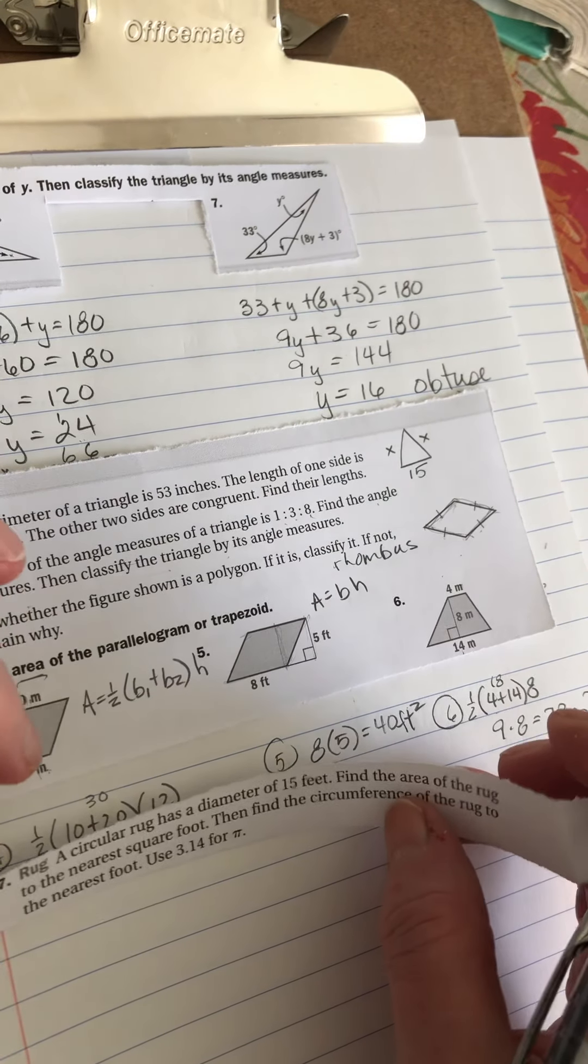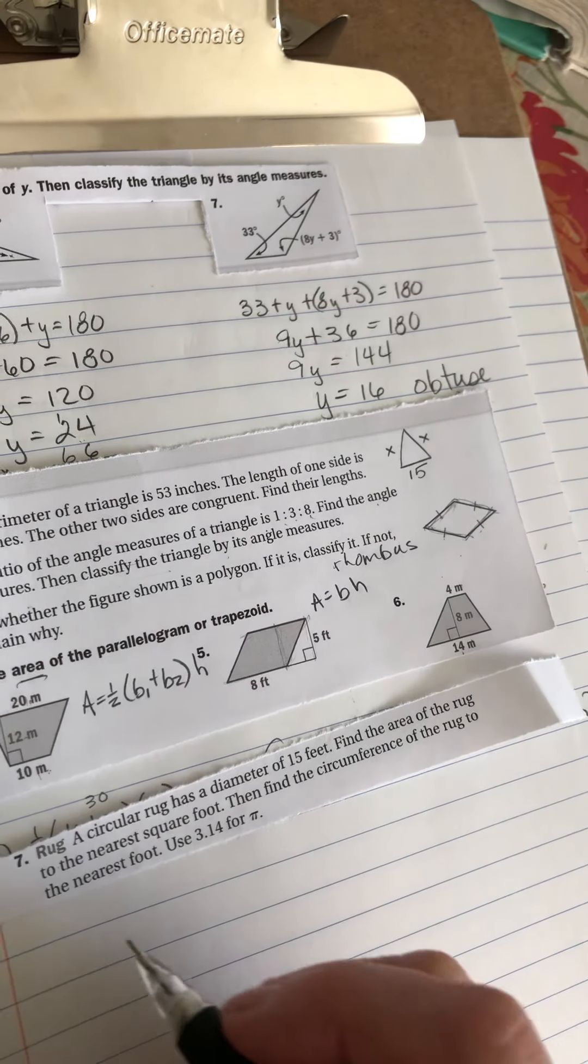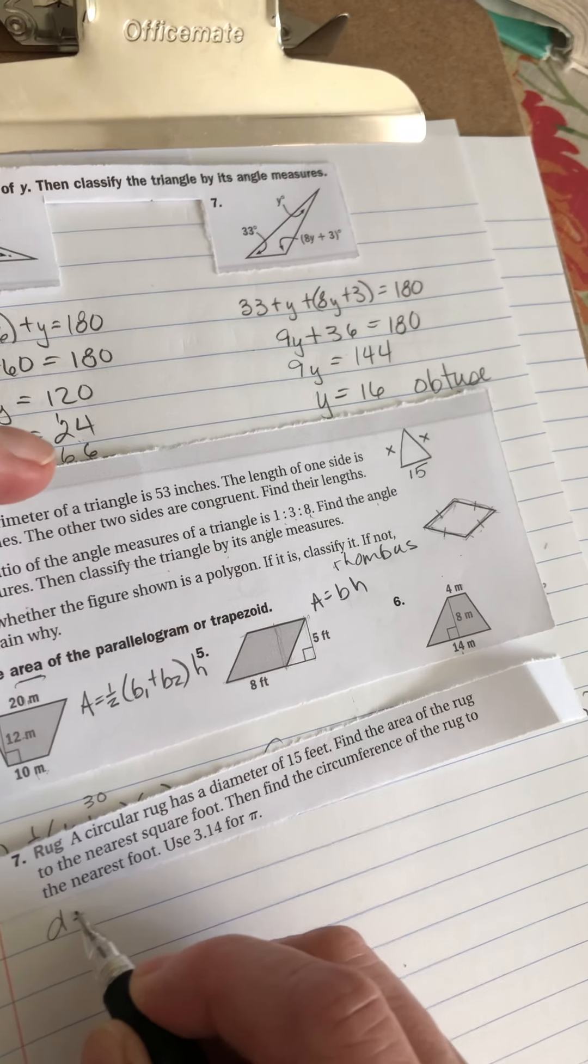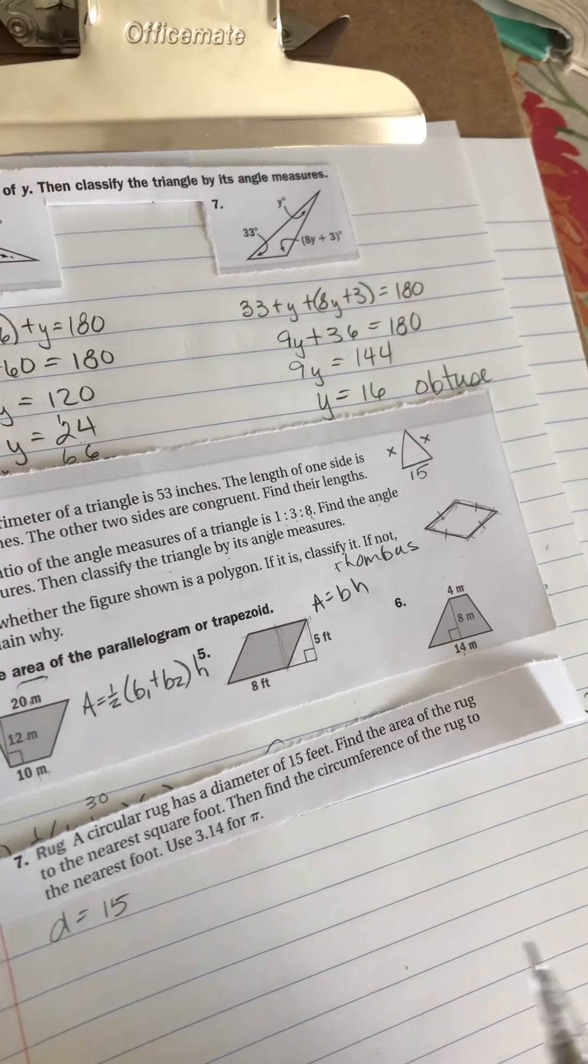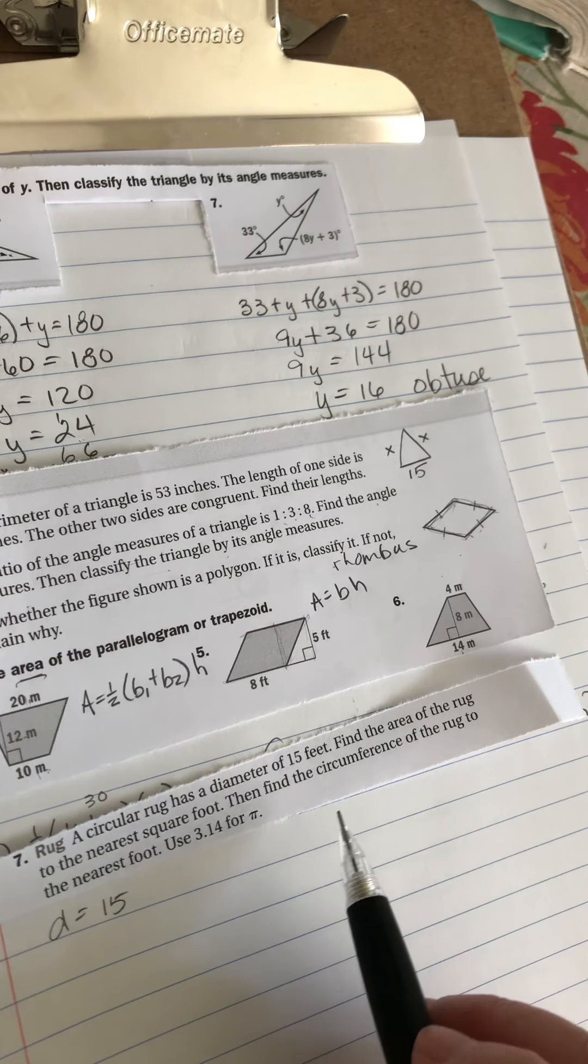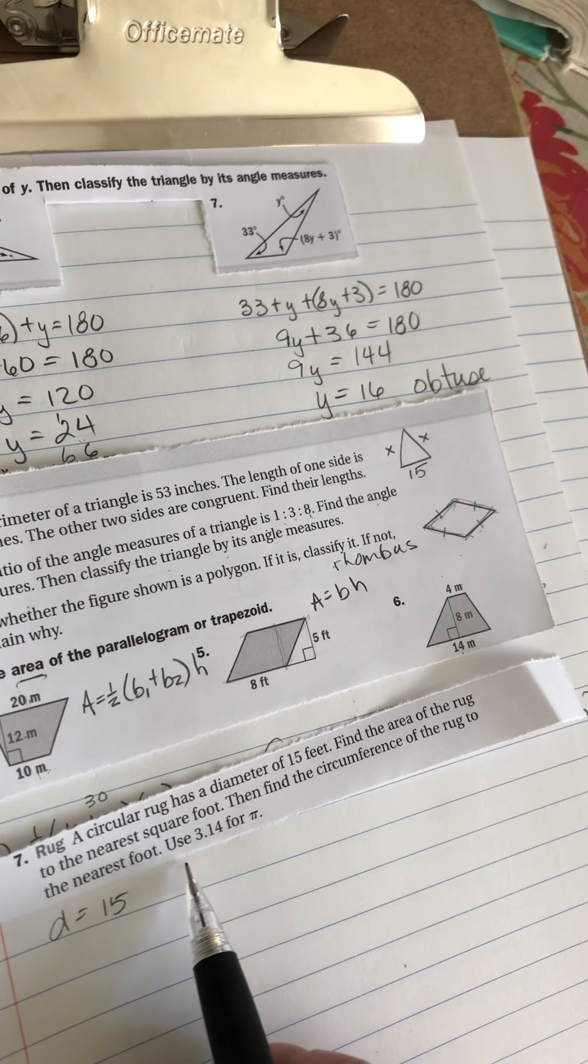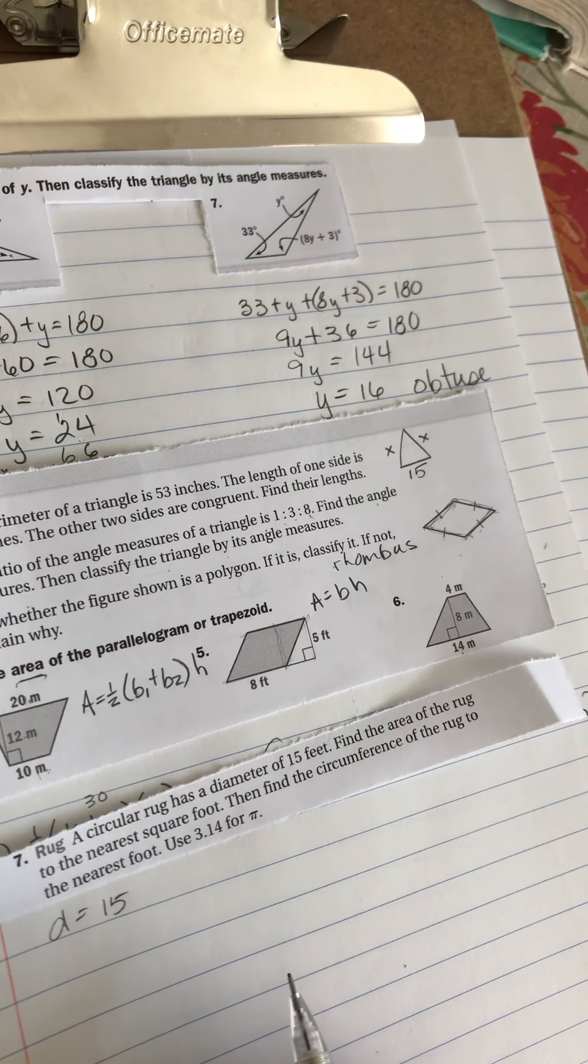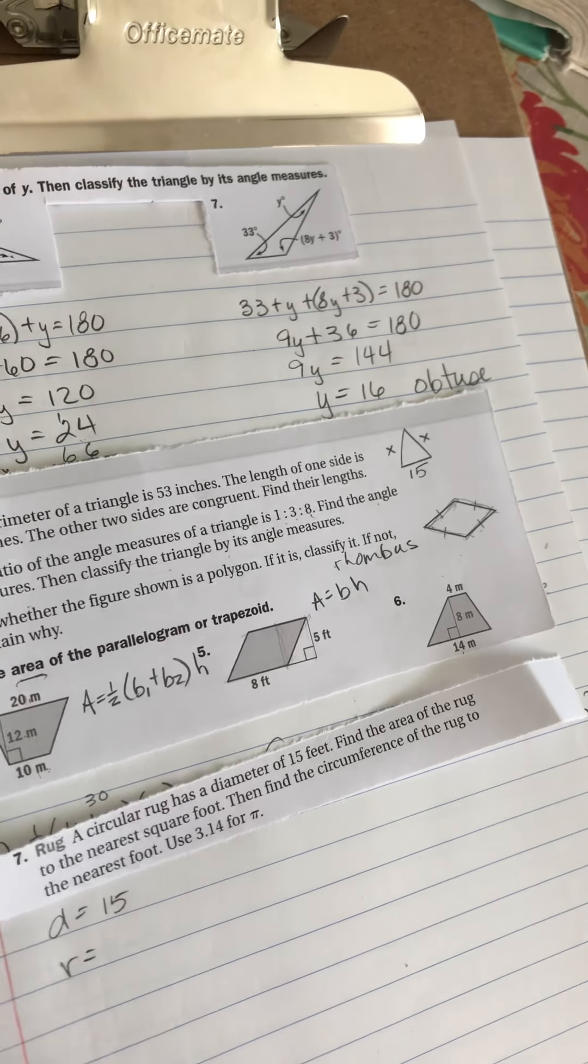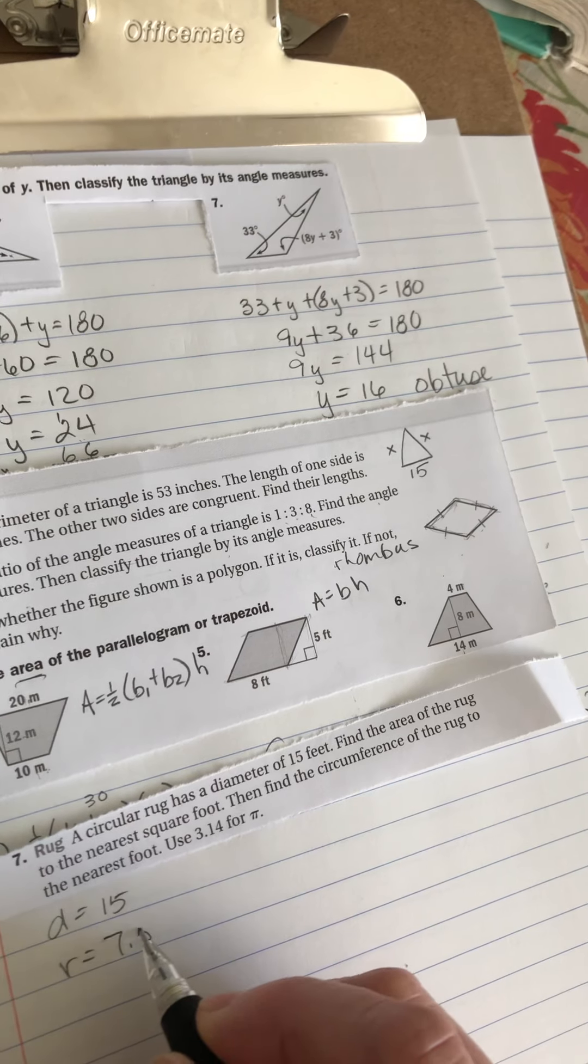I pulled out this one about the rug. A circular rug has a diameter of 15 feet. So I know that the diameter equals 15. It says find the area of the rug to the nearest square foot. Then find the circumference to the nearest foot. Use 3.14 for pi. So knowing that the diameter is 15, the radius is half of that, or 7.5.